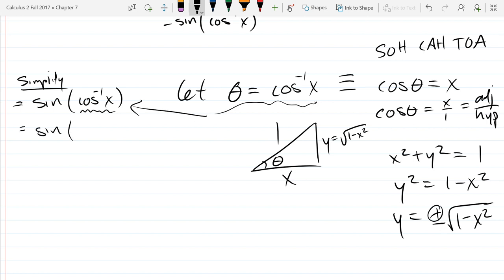So this is sine of cos inverse is theta. And now sine is opposite over hypotenuse. So our opposite is square root 1 minus x squared. And hypotenuse is 1. And that just reduces to square root 1 minus x squared.